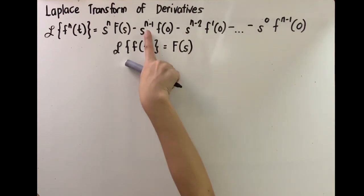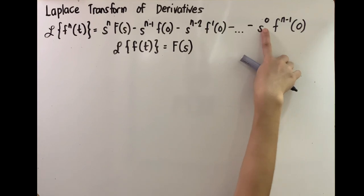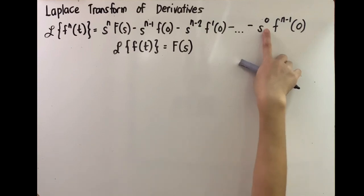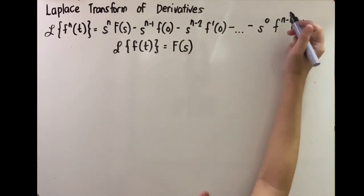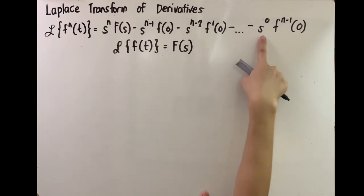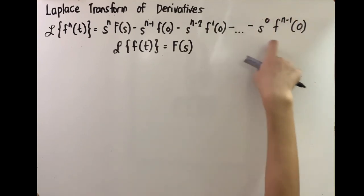We're going to continue subtracting 1 from the exponent of s until we reach s raised to 0. That is our signal to know when to stop — when s disappears — because s raised to 0 is simply equivalent to 1. When we've used up the exponent of s, that is the last expression in our formula.